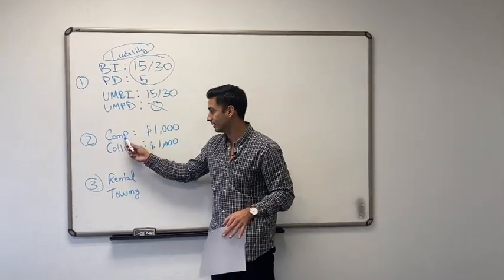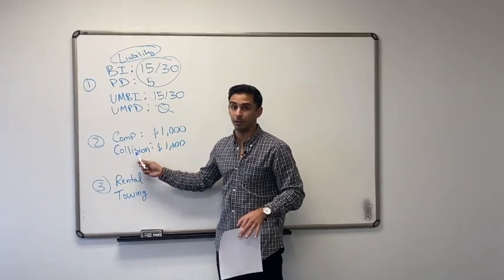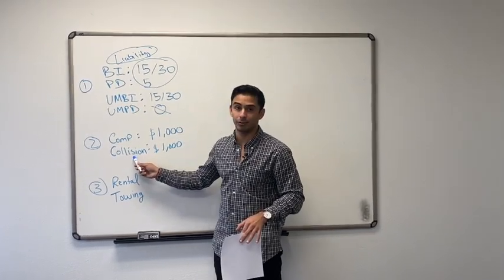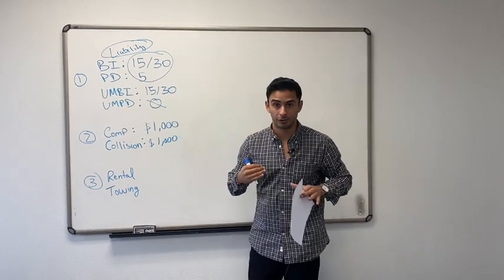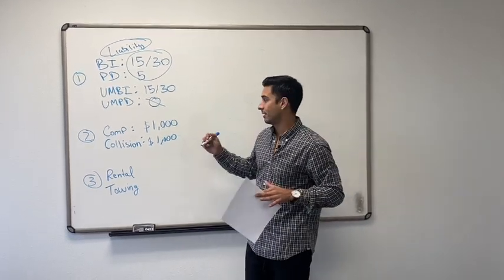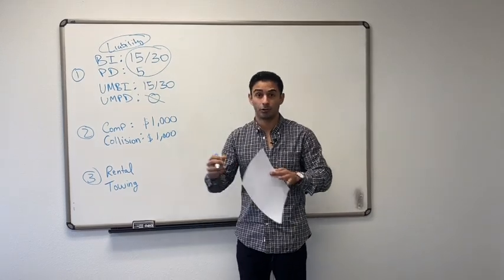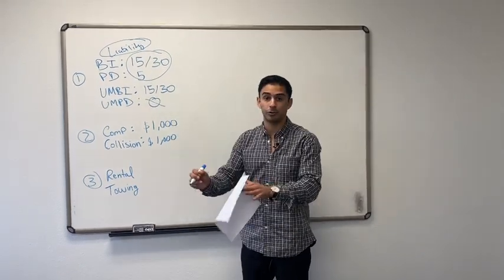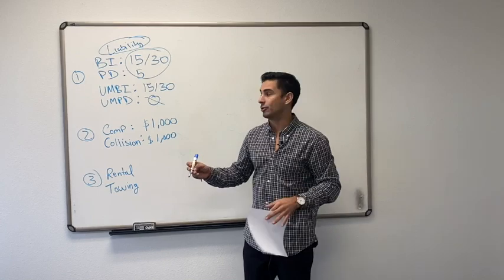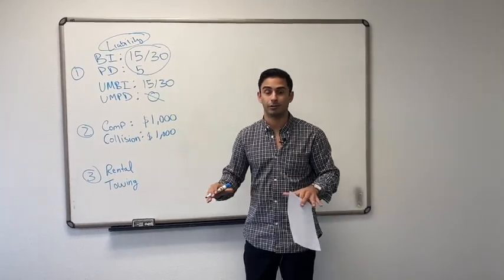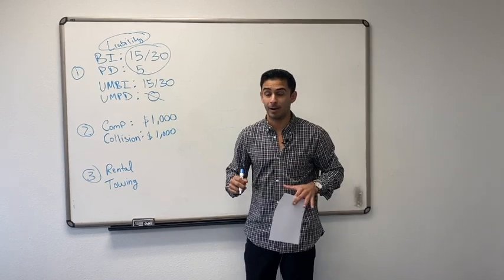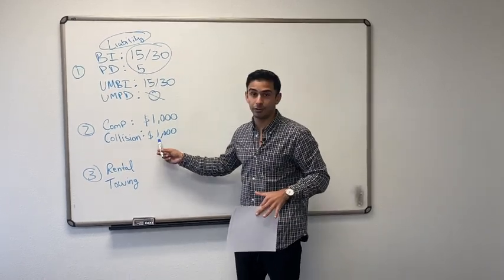So comprehensive and collision. Collision, I'll start with this one because this one's actually a little easier to understand. Collision is if you hit somebody and it's your fault. You want to repair your car as well. So it's your fault. You hit them. It was your mistake. You want to replace your car. Your car is totaled. It's a $25,000 vehicle. You need to get your car repaired.